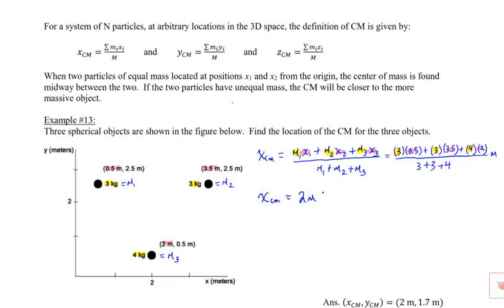Then you can do a similar thing for the y center of mass. It's going to be the same equation, except you just have y's. M1 y1, M2 y2 plus M3 y3 divided by the sum of the masses.